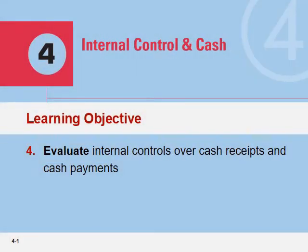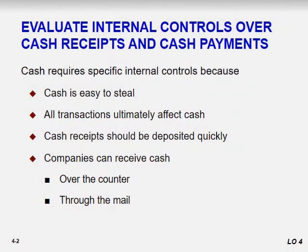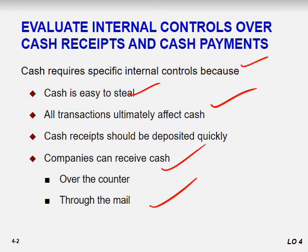Our next learning objective is to evaluate internal controls over cash receipts and cash payments. Cash requires specific internal controls because cash is easy to steal and easy to convert to other forms of wealth. Moreover, all transactions ultimately affect cash. All cash receipts should be deposited for safekeeping in the bank. Companies receive cash over the counter and through the mail, and each source of cash has its own security measures.